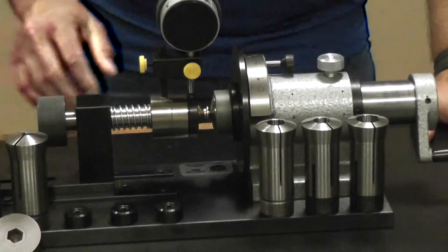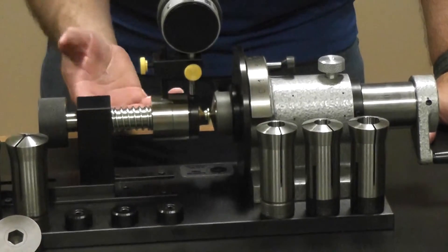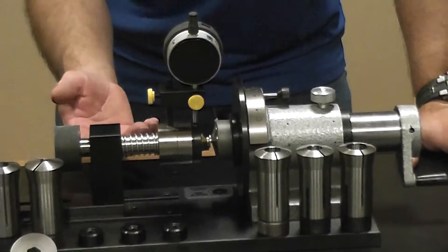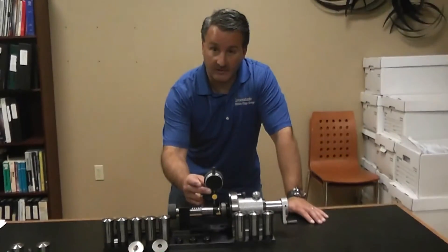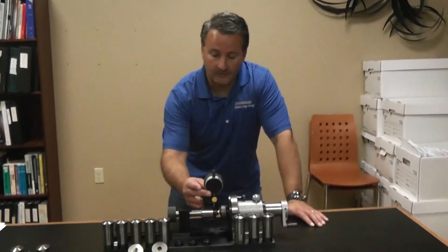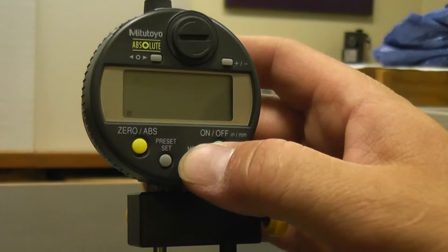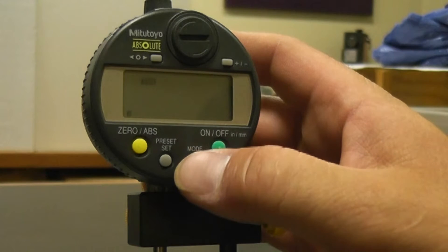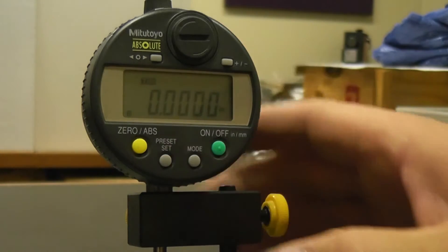At this time, we want to make sure that our indicator is in the proper mode. It's a TIR indicator, which means total indicator runout again. So in order to do that, if it's not already in there, we have to press mode four different times until we see the TIR flashing on the top of the screen. At that point, we can hit the preset set button, which accepts that mode.